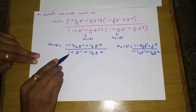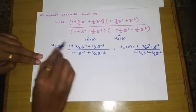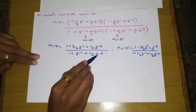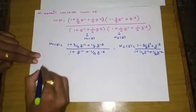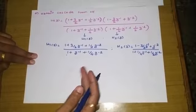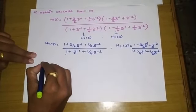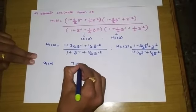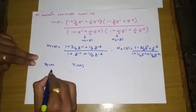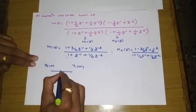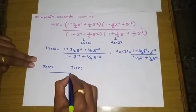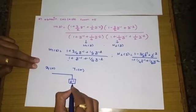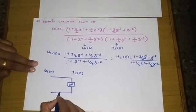For H1(Z), we need two delay elements: z⁻¹ and z⁻². By the direct form 2 procedure, we write the all-pole system on one side and the all-zero system on the other. Starting with X1(N) as input, the first coefficient is 1. We introduce the first delay element z⁻¹, multiplied by 1.